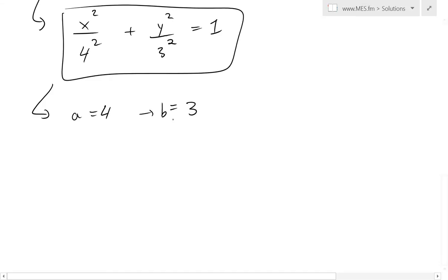So now that we have the a and b values, we can get the foci, which is basically the c values, and c squared is equal to a squared minus b squared, and this equals to, well, this is just going to be 16 minus 9, which equals to 7.